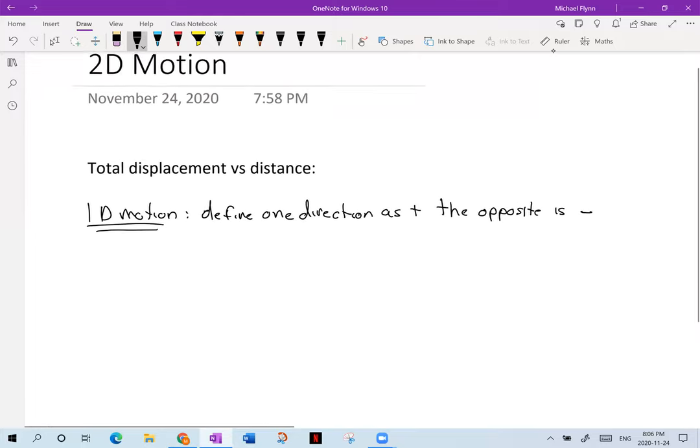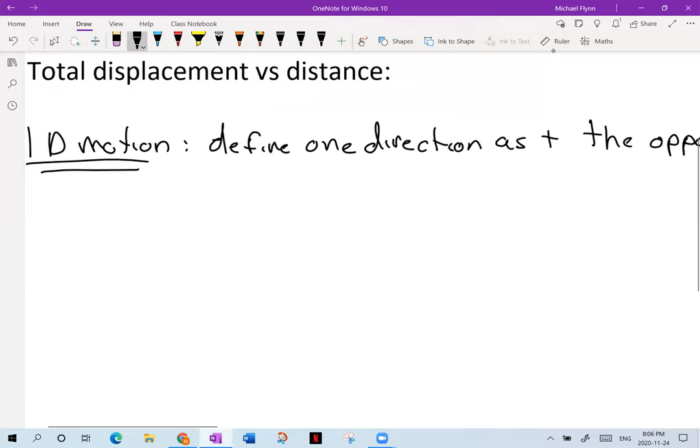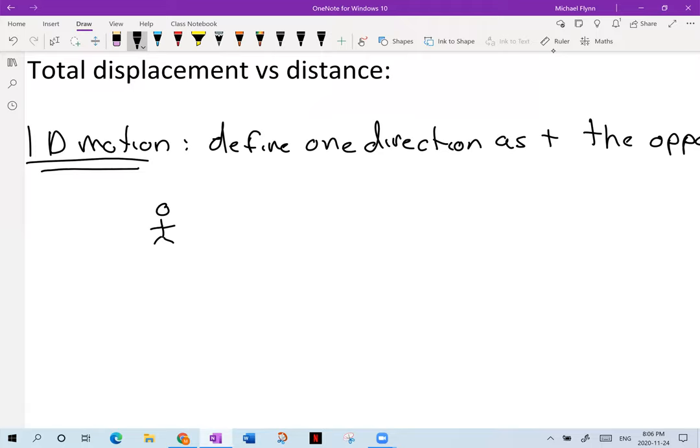So let me give you an example of one-dimensional displacement. Let's say we have our little man here. He starts right there. Let's say he goes 10 meters to the east. Then he actually turns around. I'm going to color this vector red. He turns around and goes 20 meters that way, and he ends up over here.